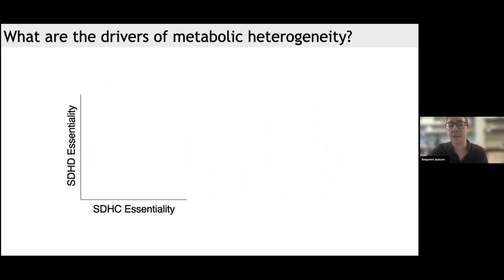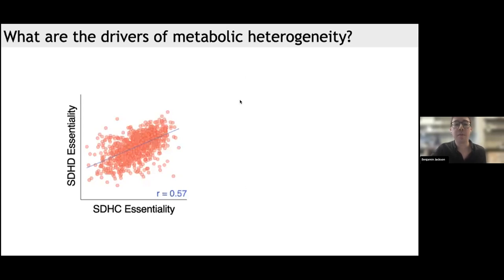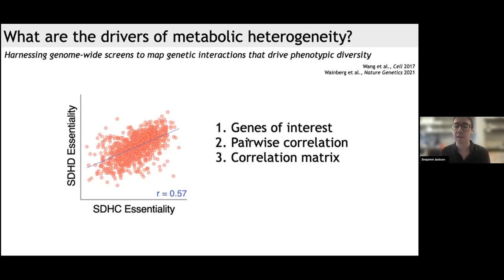I'm plotting the essentiality of two subunits of the succinate dehydrogenase complex — complex two of the ETC — SDHD versus SDHC. These genes are highly correlated, which makes intuitive sense: they work together in the same complex, so a cancer cell line that cares a lot about loss of SDHD is likely to also care about SDHC. What's useful is that you can predict gene modules from highly correlated genes — two genes with the same co-essentiality profile can work in the same gene module. These interactions are strong enough that they've been used to infer the function of previously uncharacterized genes.